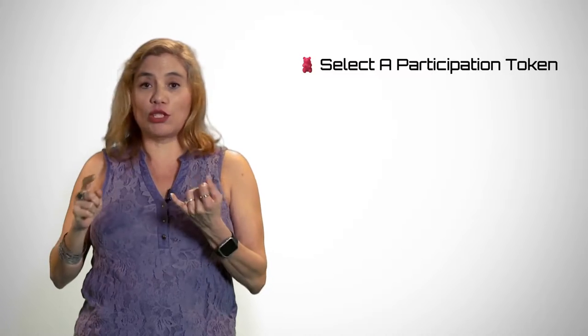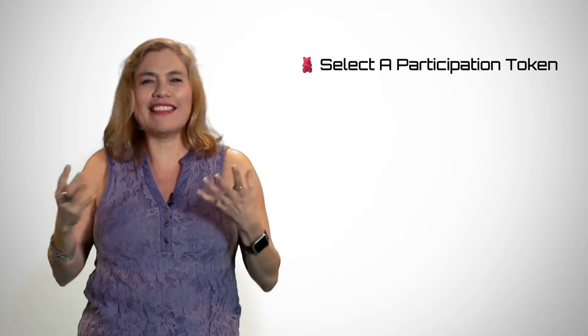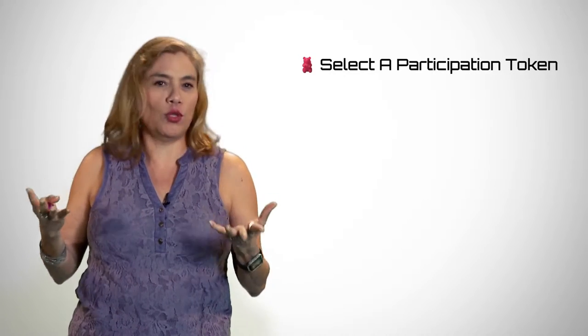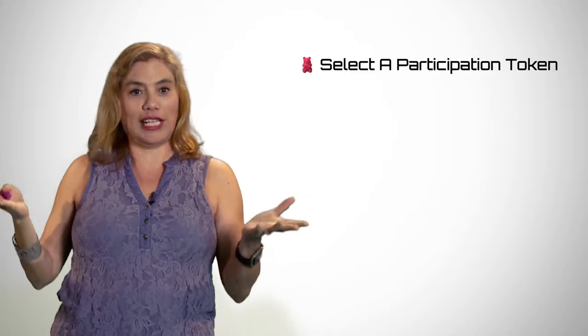So this is what we're going to do. In order to get this done, the first thing we need to do is pick a participation token. I got these counting bears from a tub, but you can actually get tennis balls or plush toys — anything that is fun to you and for your class.